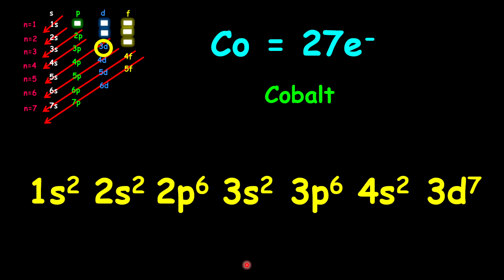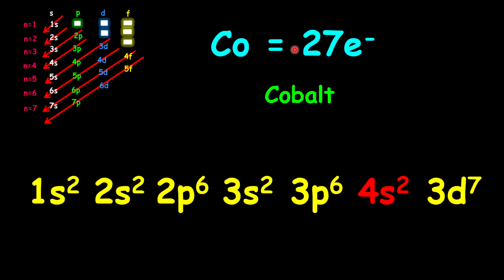What is unique about this electron configuration is that 4S comes before 3D based on the energy orbitals. In terms of the valence shell, 4 is the highest energy level. Therefore, 4S2 gives cobalt 2 valence electrons.